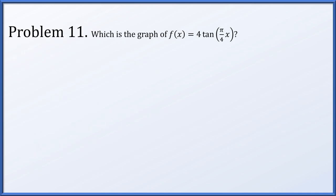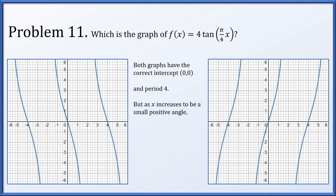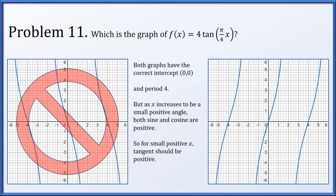Problem 11: what is the graph of f(x) = 4·tan(π/4 · x)? We have two options. Both graphs have the correct intercept of (0,0) and the correct period of 4. However, if x increases from 0 to a small positive angle, sine and cosine will both be positive, meaning tangent will be positive for small positive values of x. Looking at one graph, when x is slightly positive, the curve reaches negative values — that's not what we would expect. So it's not that one.